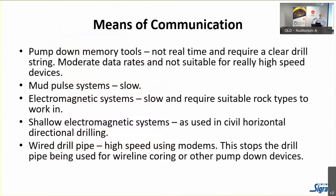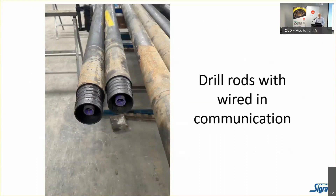Electromagnetic systems transmit sideways through the rock but require the right kind of rock. Shallow electromagnetic systems work well for service drilling where someone walks over the drill path. Wired drill pipe is really the way to go for high-speed communications — you can get around 20 kilobaud through such a system, and the connections just make up when you join pipes.